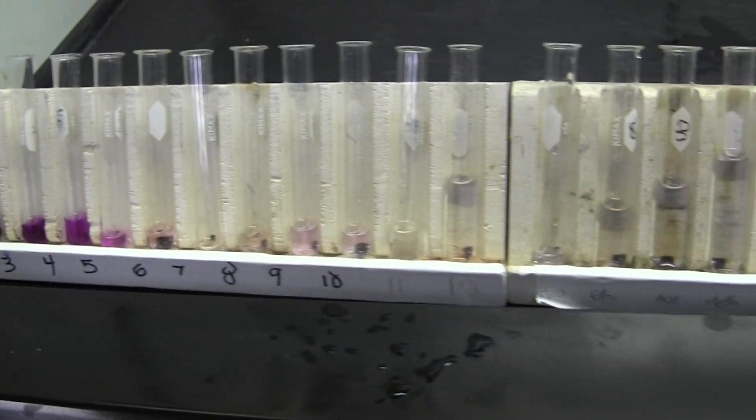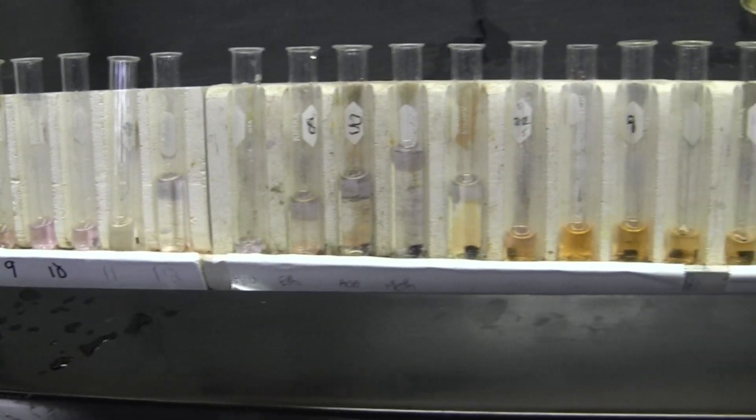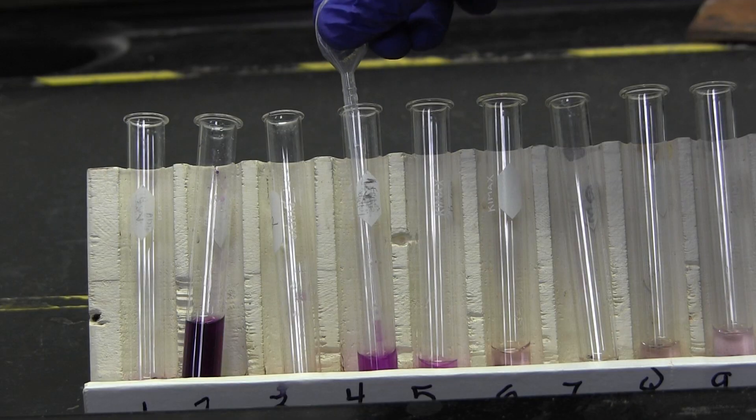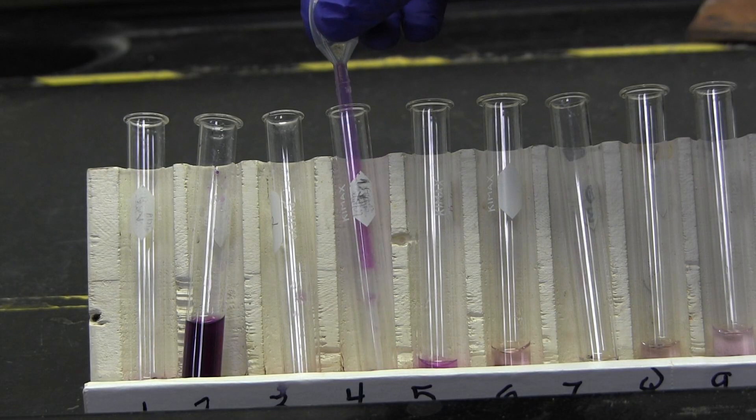Collect your fractions according to the colors eluting. Try to collect the most intense colors in their own test tubes, as these are your purest dilutants. You will want to end up with about a half test tube of each pure color.